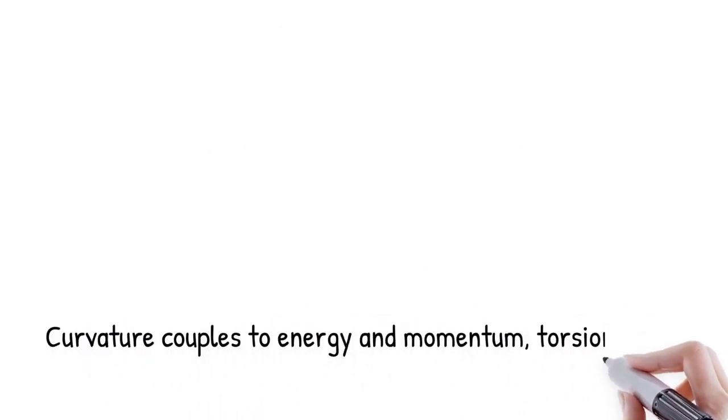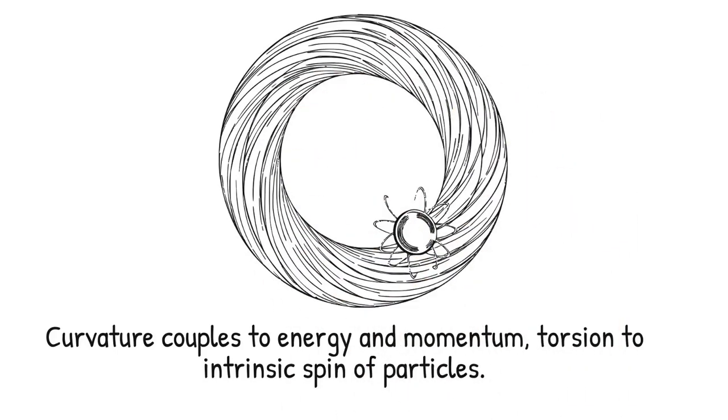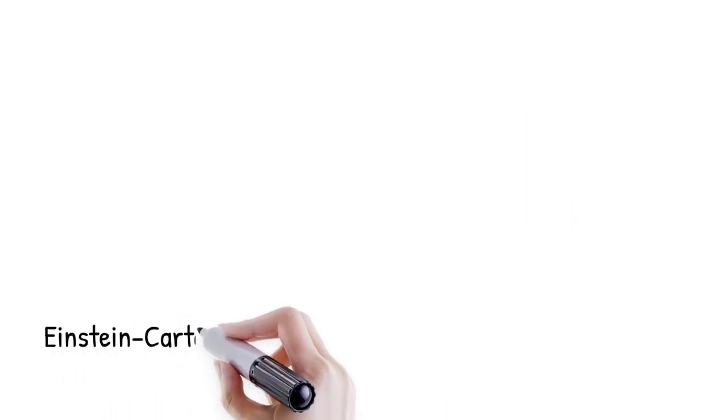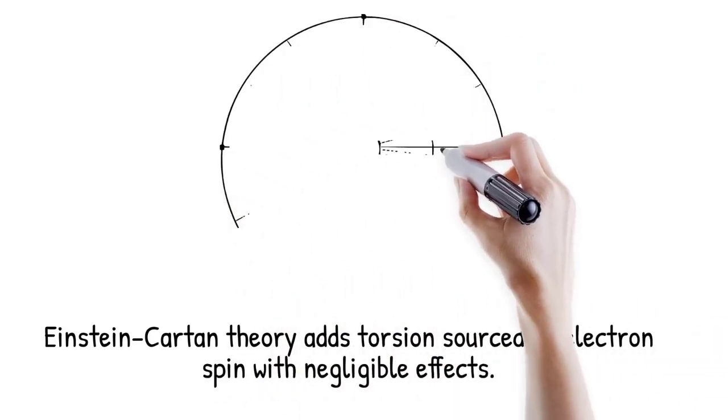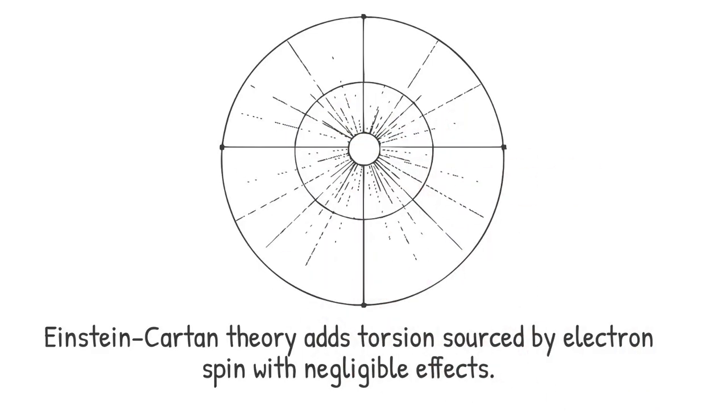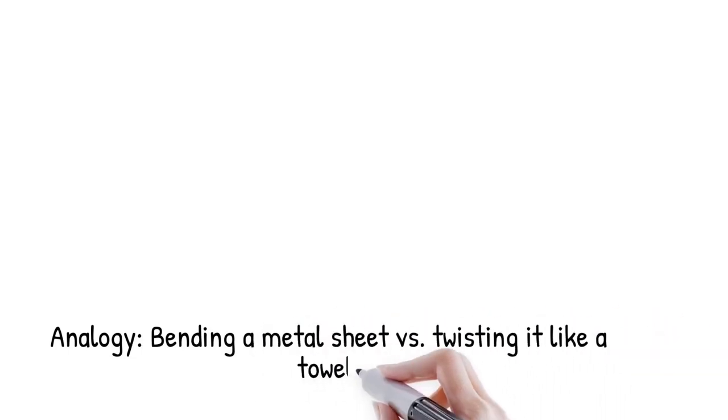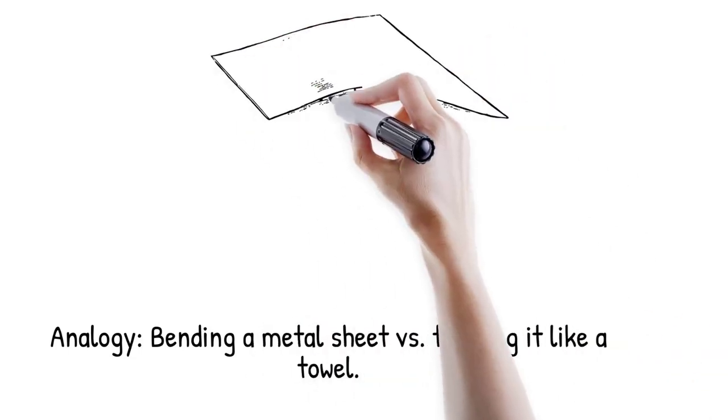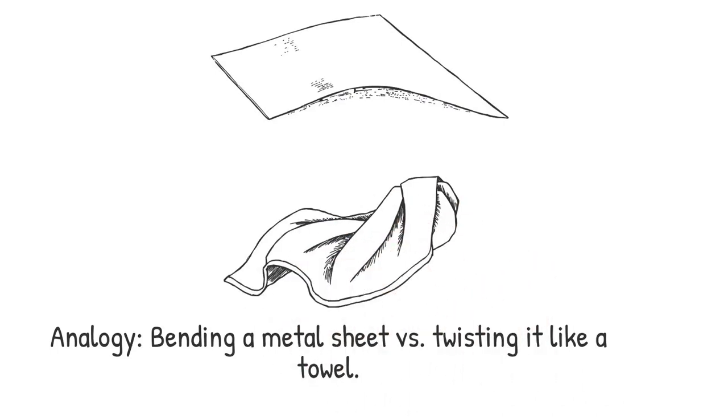Curvature couples to energy and momentum densities, whereas torsion couples directly to intrinsic spin of particles. The Einstein-Cartan theory introduces torsion sourced by electron spin, predicting negligible deviations from general relativity under normal conditions, akin to comparing bending a sheet of metal to twisting it like a towel. Both deform it, but in fundamentally different ways.